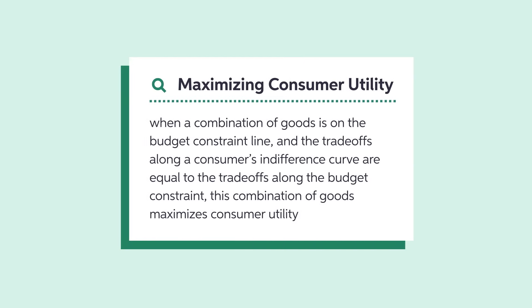When a combination of goods is on the budget constraint line, and the trade-offs along a consumer's indifference curve are equal to the trade-offs along the budget constraint, this combination of goods maximizes consumer utility.